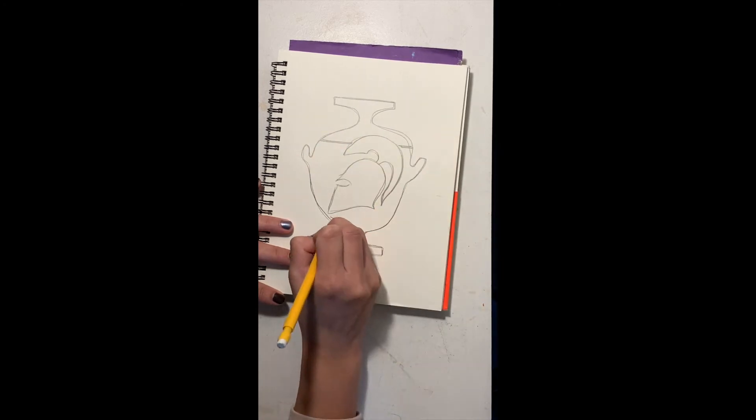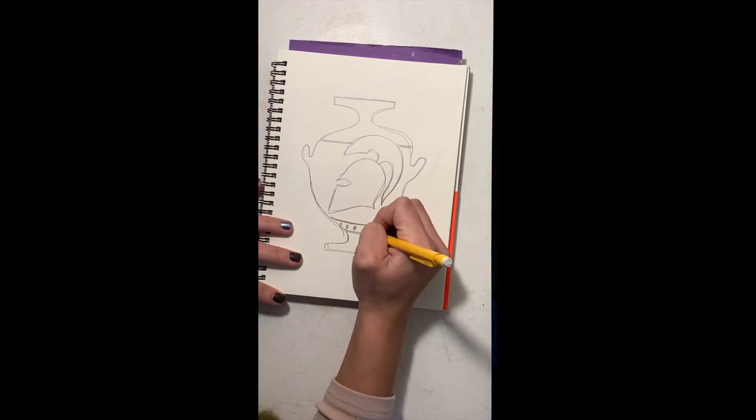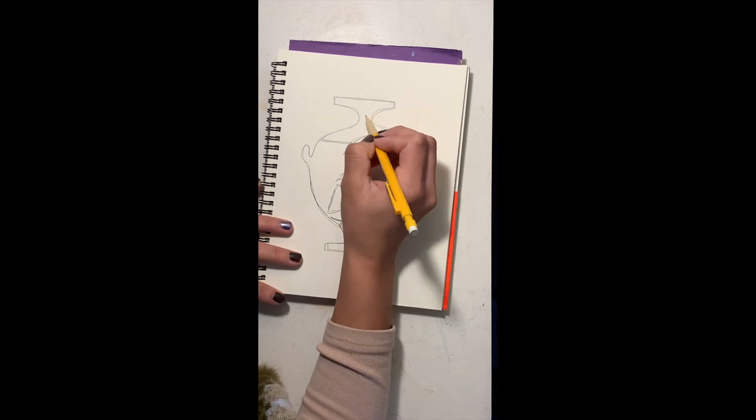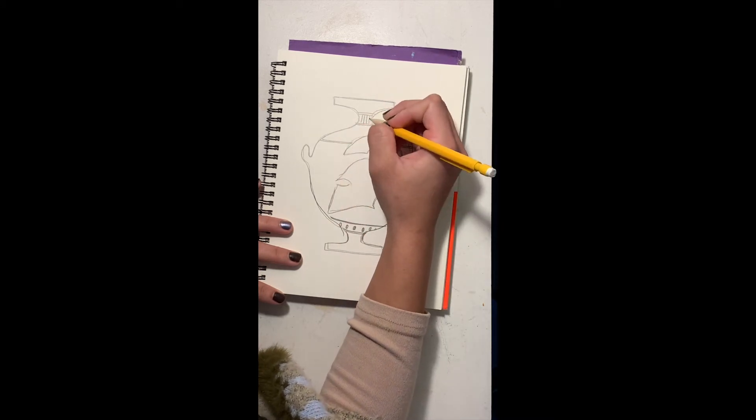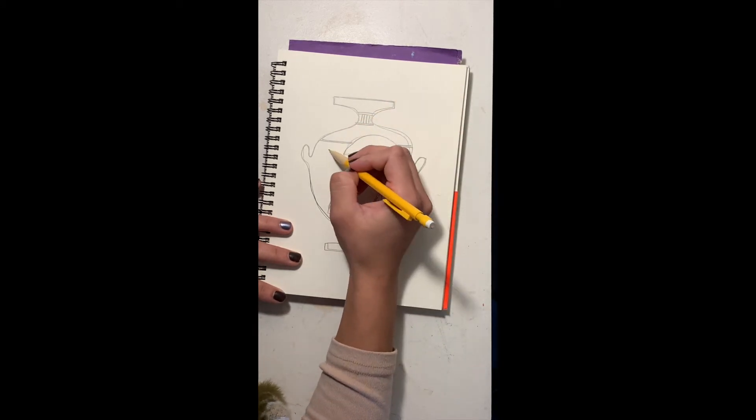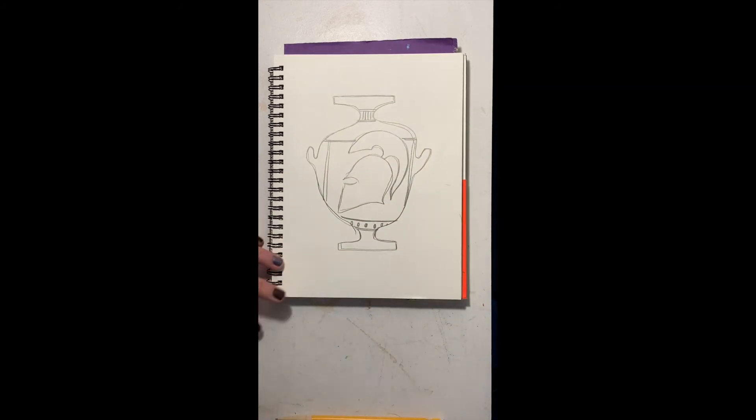And then I'm gonna add my decorative lines because I want to highlight the main image and then these lines kind of happen at transition points where the curves change directions in the pot. That's a little bit more technical ceramic stuff but I really like ceramics.